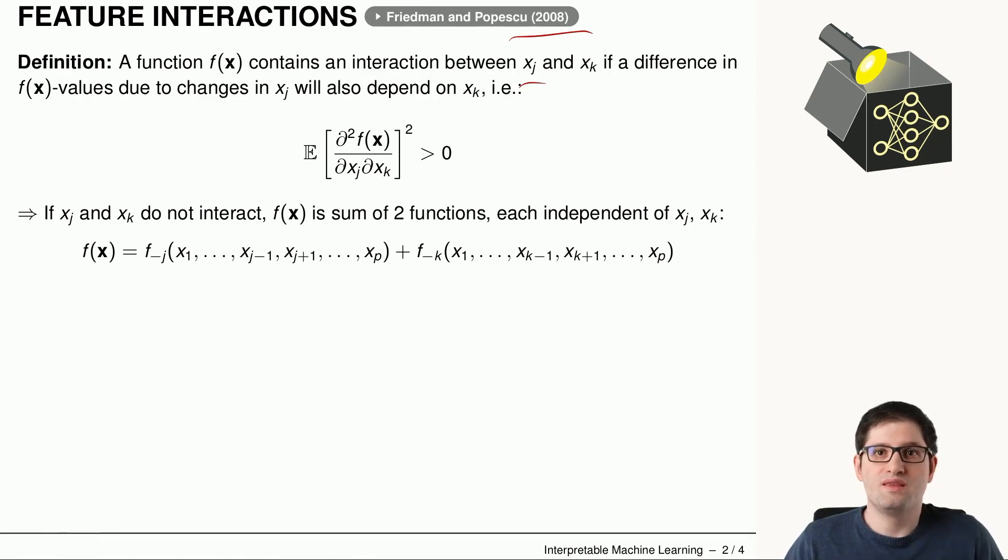the difference in the function values due to changes of one of these two features will also depend on the other feature. This means that if we take the derivative with respect to one feature and then take the derivative with respect to the second feature and we square this resulting expectation here. If the value is greater than zero, it means that our function contains interactions.